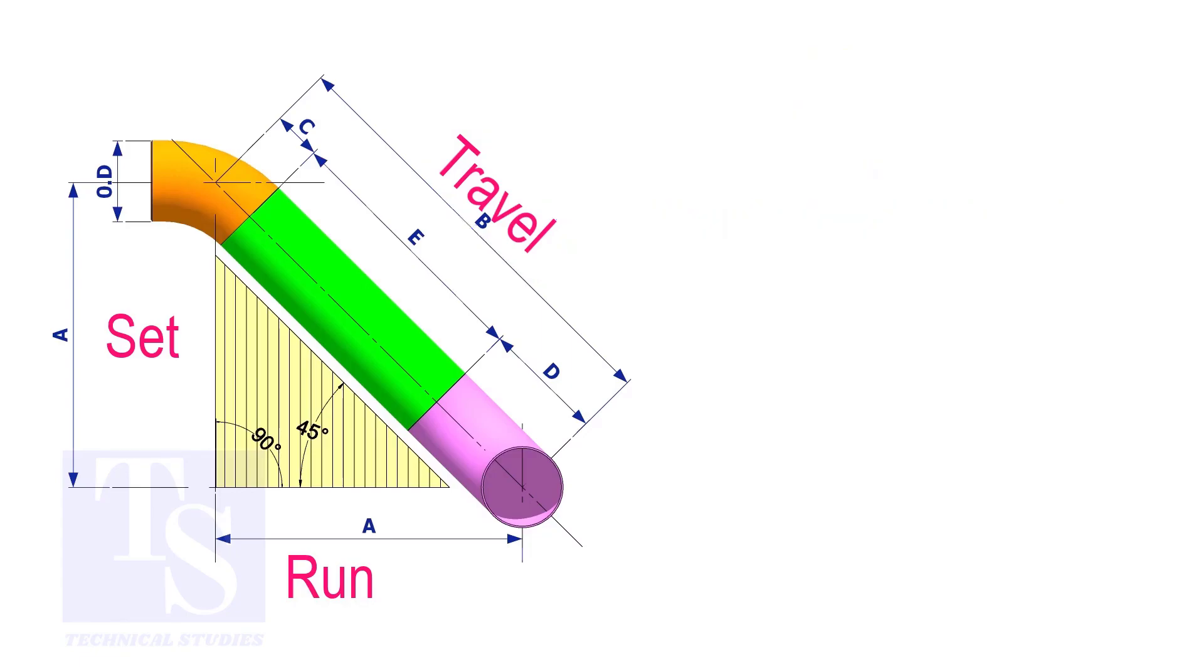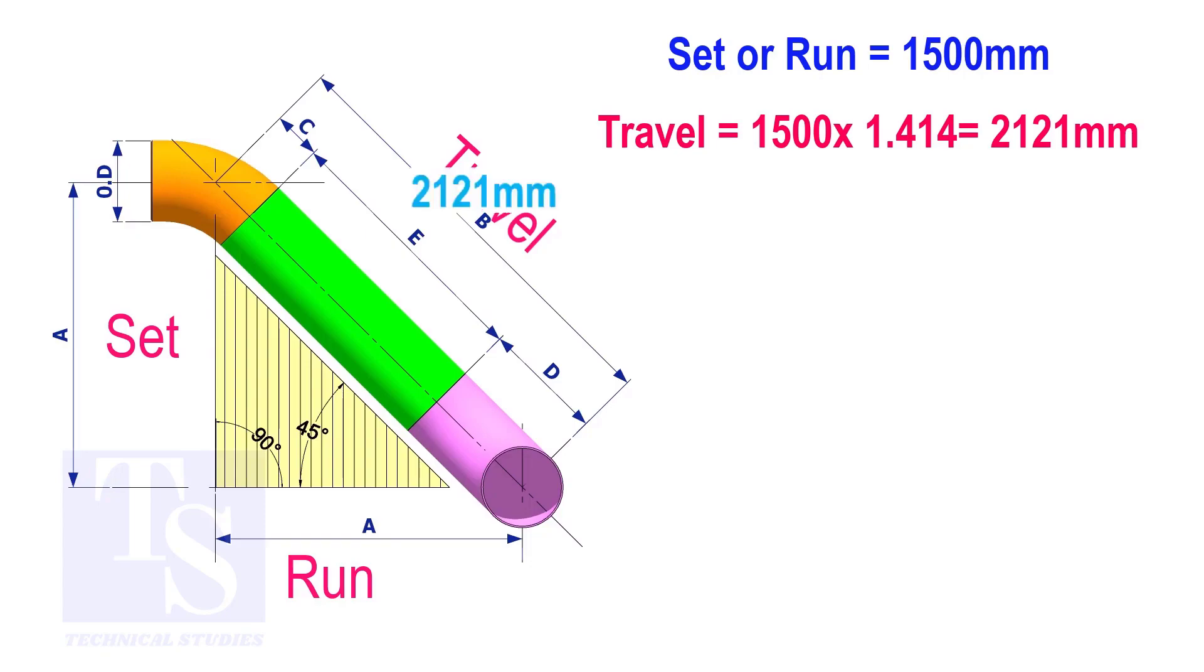Try another example. Suppose the value of the set or the run is 1500 millimeters. The value of the travel will be 1500 multiplied by 1.414 equals 2121 millimeters.